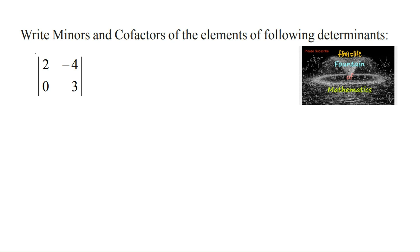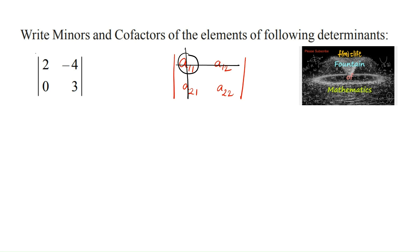Write minors and cofactors of the elements of the following determinant: the 2x2 matrix with elements 2, -4, 0, 3. We know that we can find the minor of each and every element of the determinant by deleting its row and column — the sub-matrix determinant will be the minor. For example, in a 2x2 matrix, the minor of element a11 will be found by deleting its row and column, leaving a single element a22.